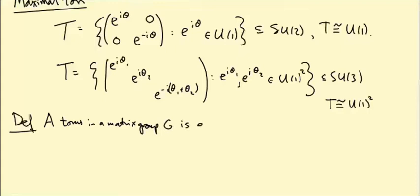A smooth injective homomorphism from U(1)^n to G.